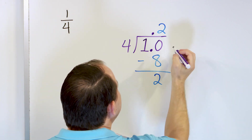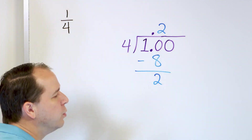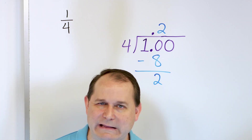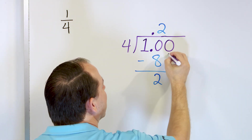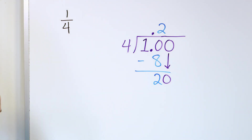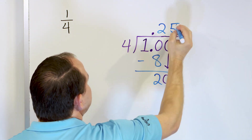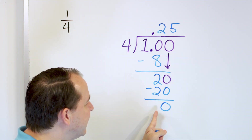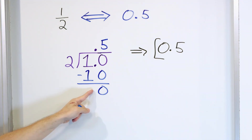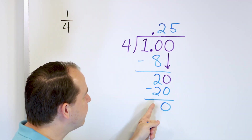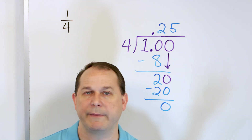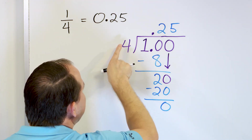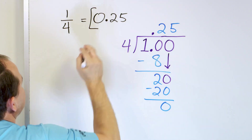We didn't get a remainder of 0, so we have to continue. We can add zeros after the decimal as many as we need, because 1.00 is the same as 1.0, which is the same as 1 — any zeros after a decimal point don't change anything. We add another 0 and drag it down, giving us a 20. 4 times 5 is 20, so we write 5, multiply, subtract — and now our remainder is 0. We continued this process until we got a remainder of 0, and the final answer is 0.25, because 4 goes into 1 zero times, so there's an invisible 0. The answer for 1/4 is 0.25.